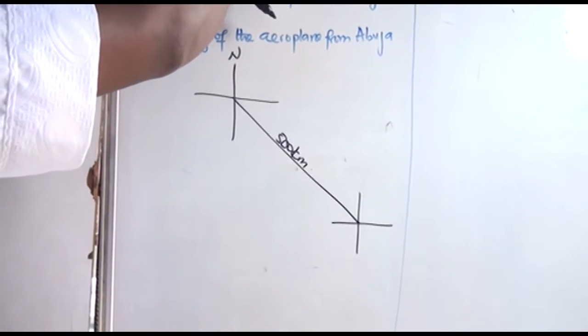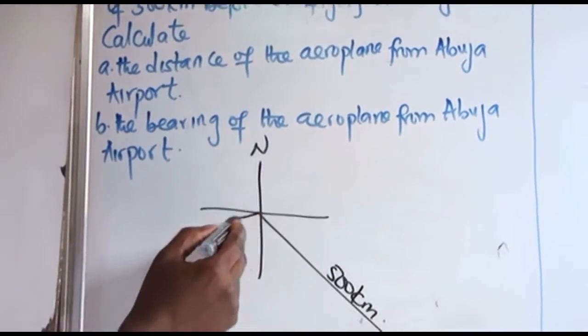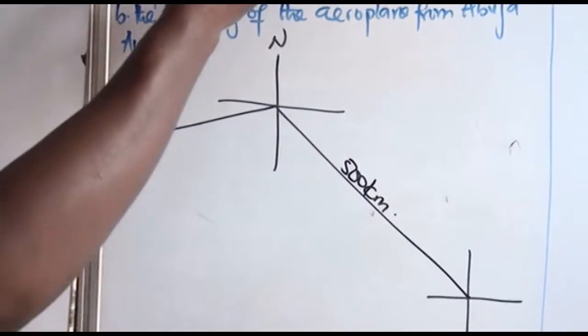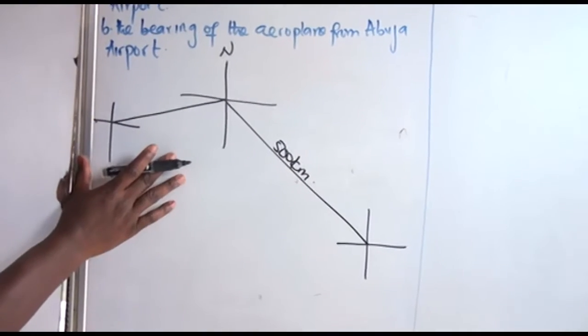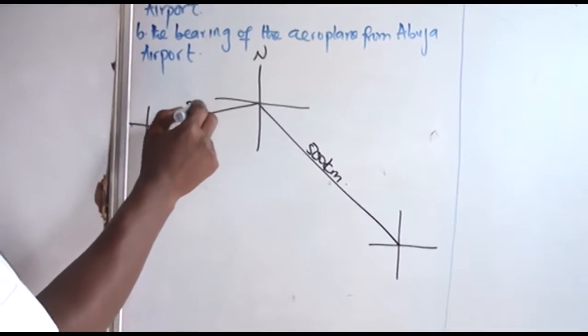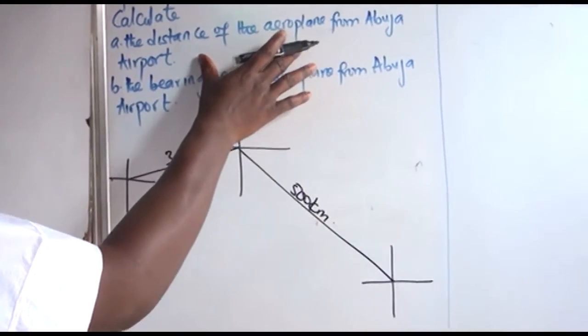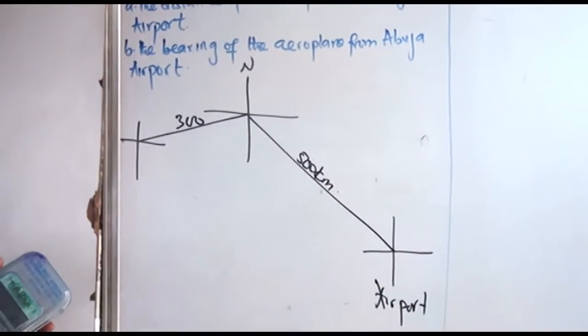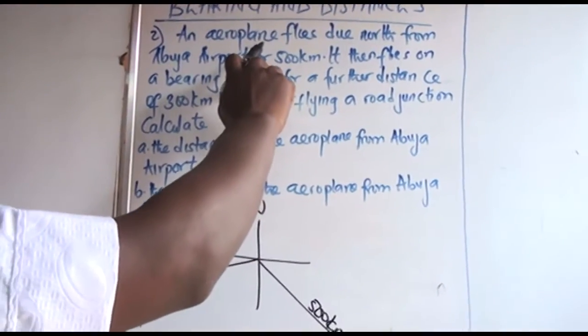It then flies on a bearing of this for a further distance of this. See, it is an aeroplane, it must come down, and if it comes down so be it. But because it is an aeroplane, that's how I let it be at this height. Distance of what? 300. Now overflying, then we have to calculate the distance of the aeroplane from Abuja airport. This is the airport. And do not forget our bearing. It then flies on a bearing of this bearing.